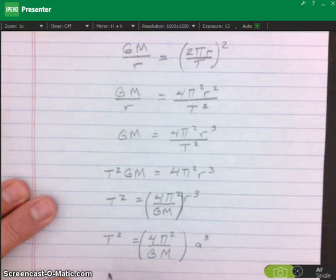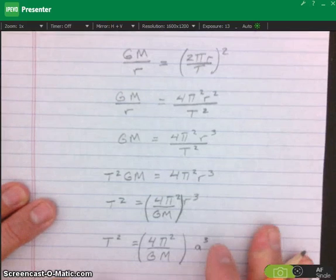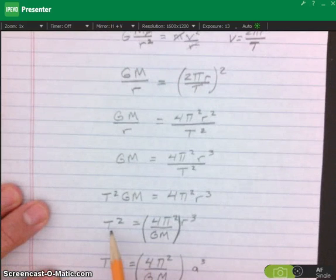So this is proof of Kepler's third law that the period squared is proportional to the semi-major axis cubed. Or in a circular orbit, the period squared is proportional to the radial distance cubed.